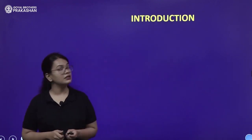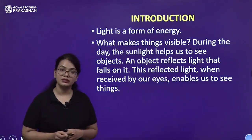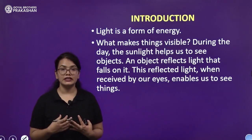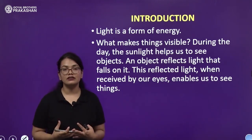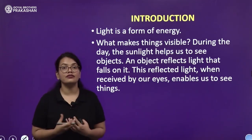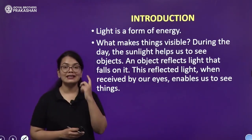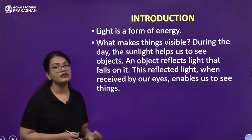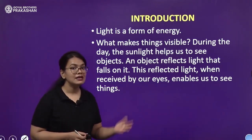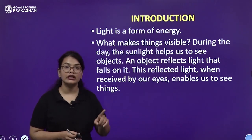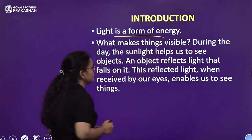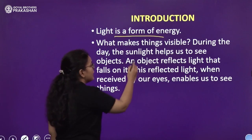Let's begin with the introduction of the chapter. What is light? In physics, if you encounter some new terms or concepts, ask yourself what it means and then answer yourself. So the first part — what exactly is light? Light is a form of energy. We've studied various forms of energy: electricity is one, heat is another, and similarly light is also a form of energy. Therefore it will obey all the laws that energy obeys.